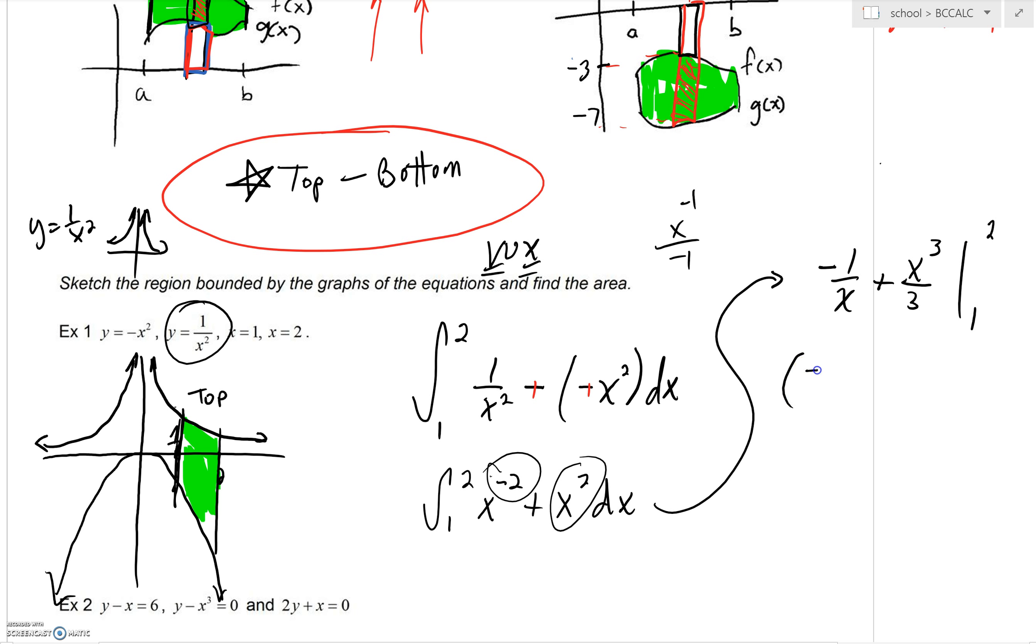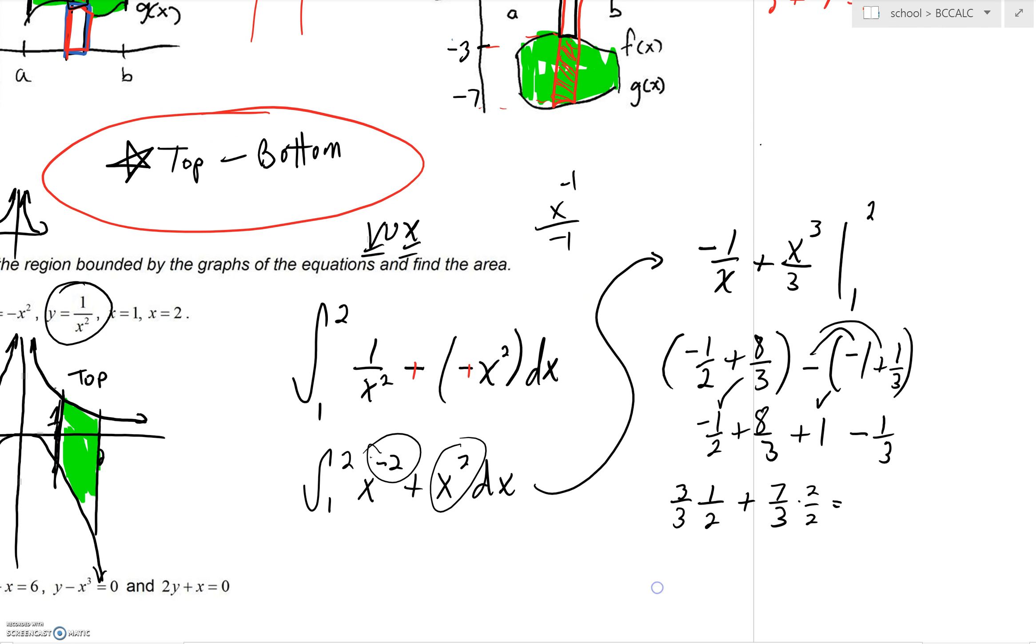The fundamental theorem then says evaluate that between two and one. We'll get negative one half, plugging in our two. Two cubed is eight, we'd get eight thirds. Minus, we'll get negative one over one, which is just a negative one, plus a one third. Before we do too much cleaning up, we can distribute this negative and we'd get a plus one and a minus one third. A negative one half and a one add up to a half, and eight thirds minus one third is seven thirds. We can get a common denominator of six. Multiply by three over three over here, multiply by two over two over here. We'd get three over six plus 14 over six. Final answer is 17 over six.